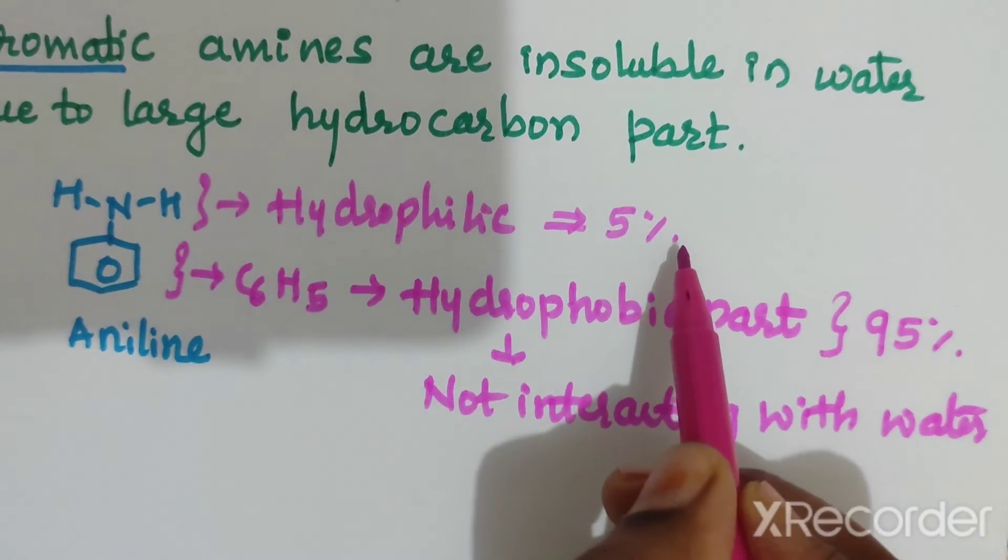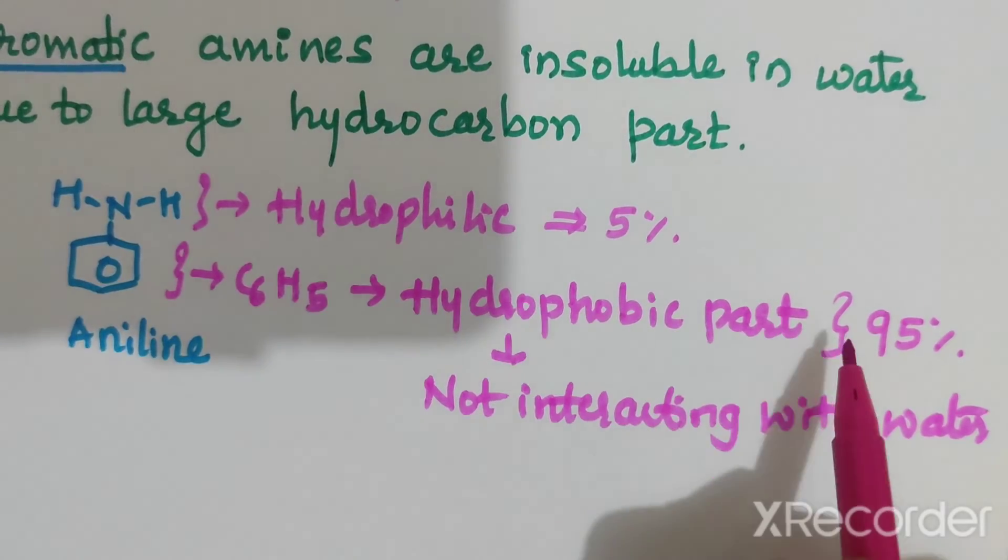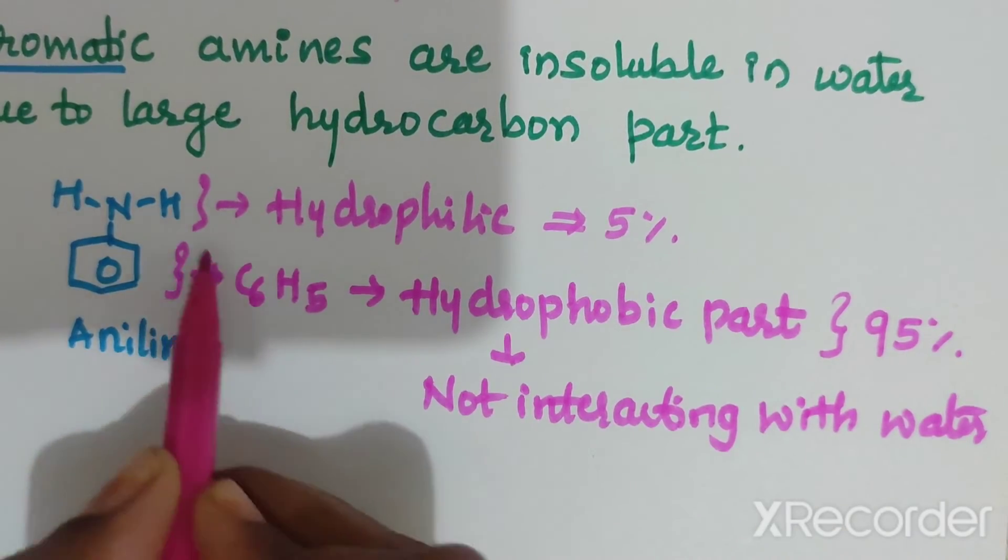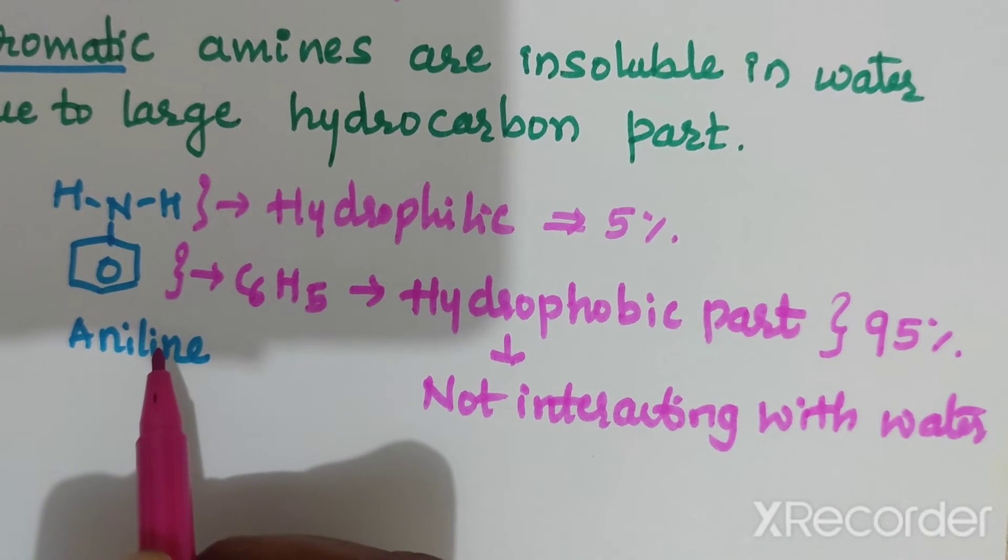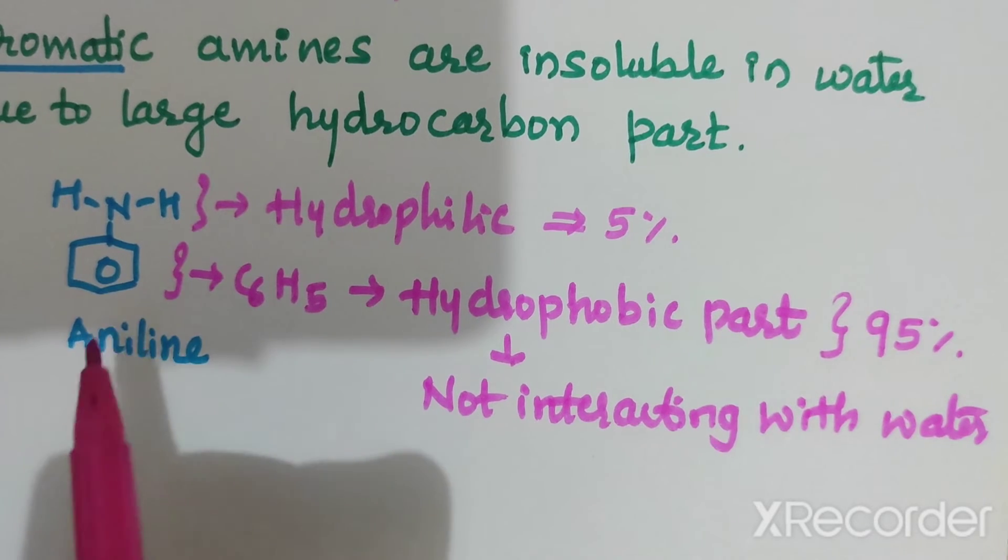NH2, it is only about 5%. Here, C6H5 is around 95%. Hence, these aromatic compounds, like for example aniline, are insoluble in water.